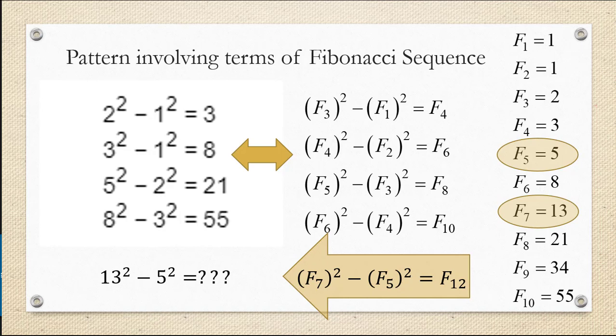To find F sub 12, we just have to add F sub 10 plus F sub 11. Unfortunately, we don't have F sub 11 yet, so we're going to have to find that 11th term before we can find the 12th term, again, because this is a recursive formula.